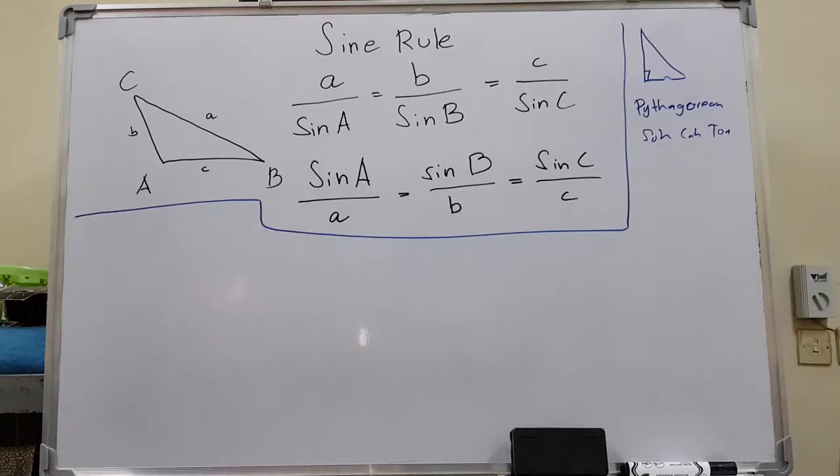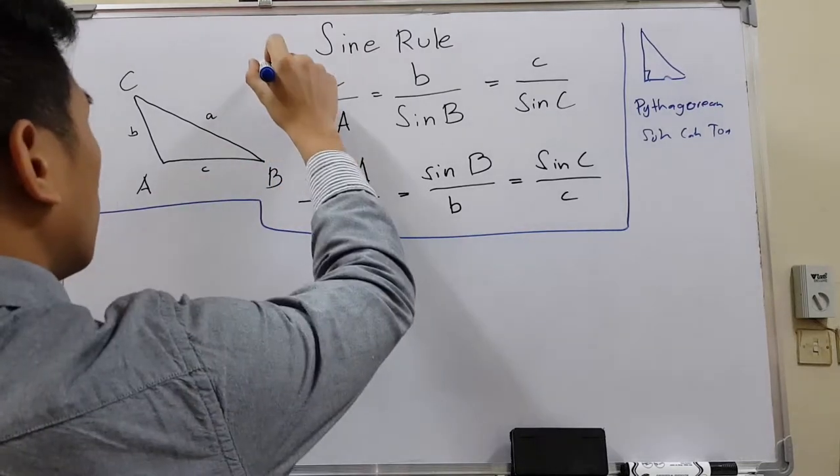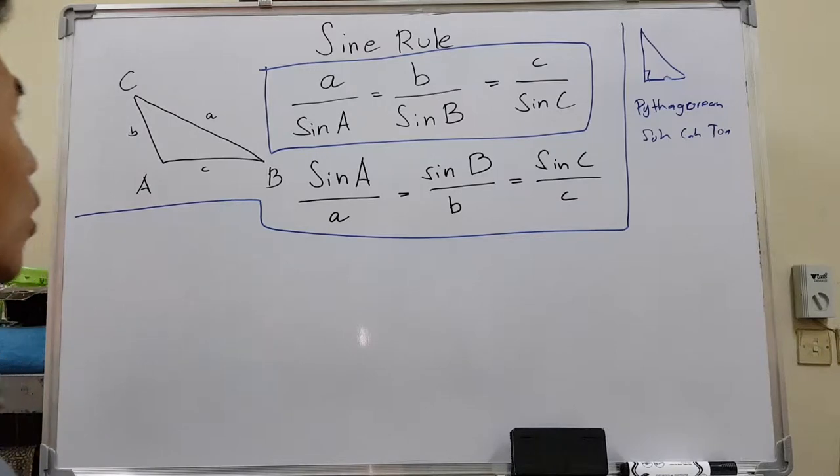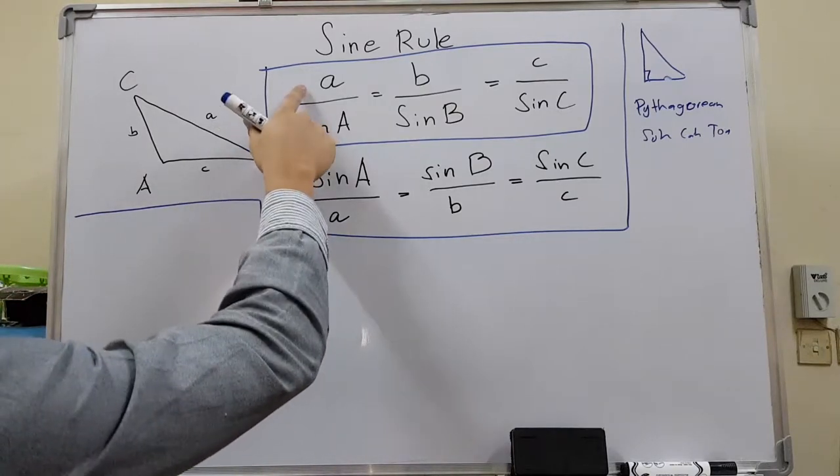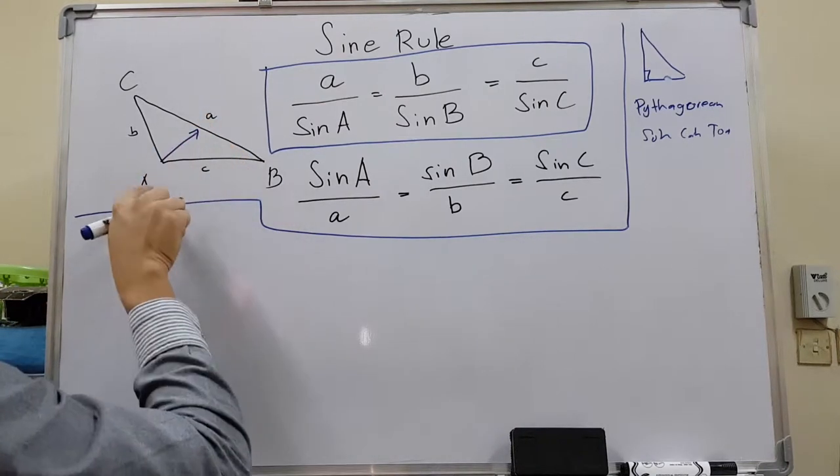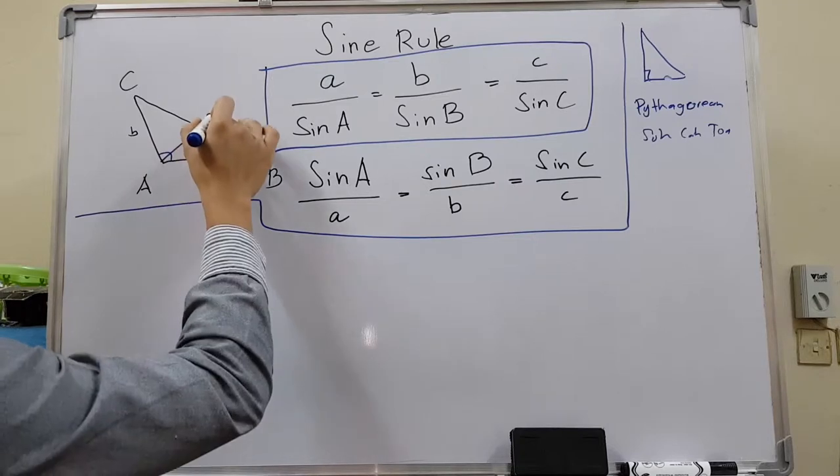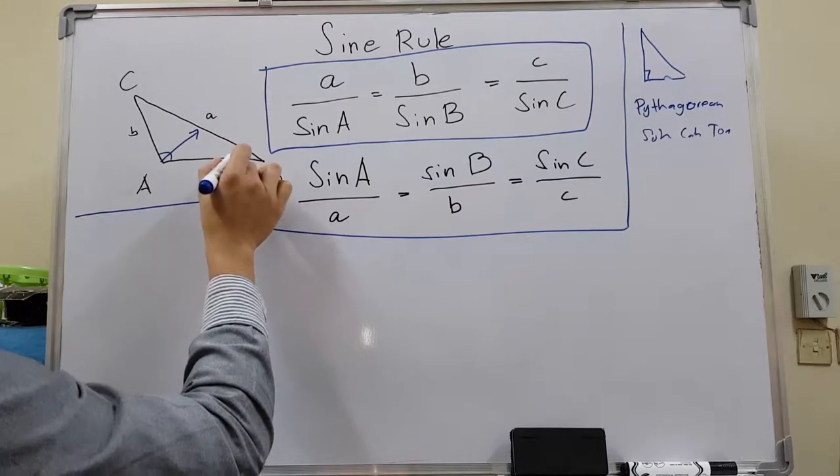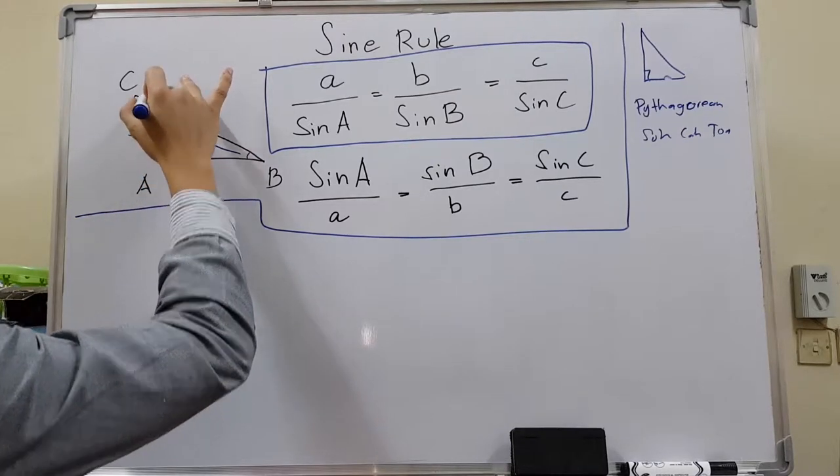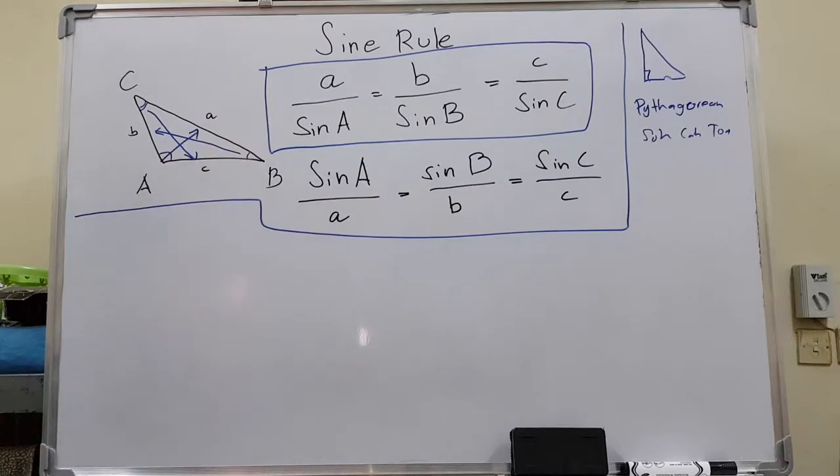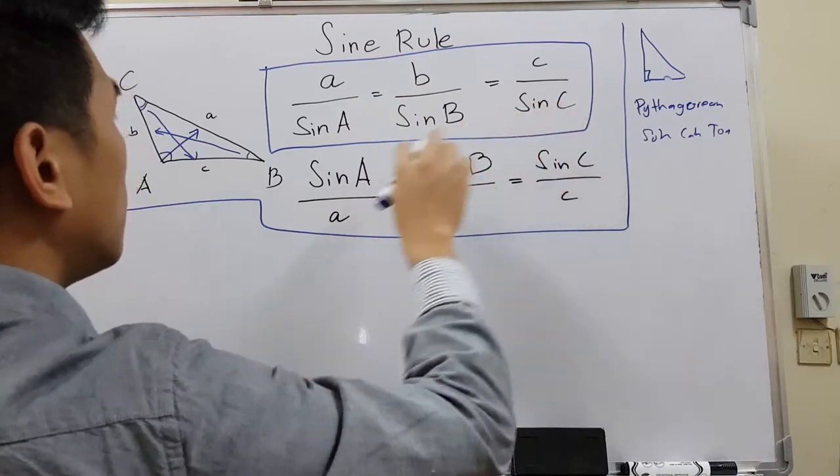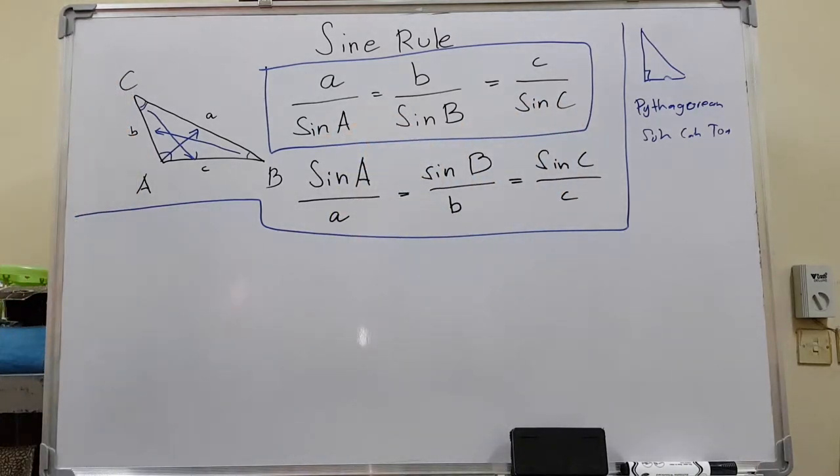What is sine rule basically? Sine rule is a ratio of the side and the angle. The formula is easy to remember. We have a over sine A. What is that A? A is basically the side opposite to angle A. If angle A is here, this will be side A. If angle B is here, opposite to that will be side B. If this is angle C, opposite to that is side C. These lowercase a, b, c are sides. Capital A, capital B, capital C along with the sines are the angles.